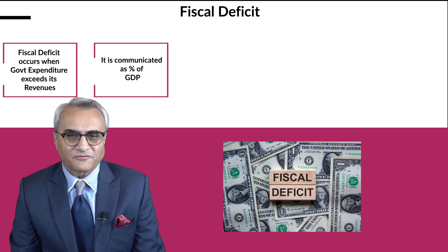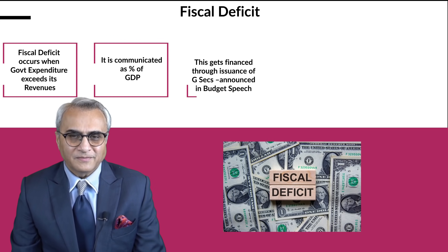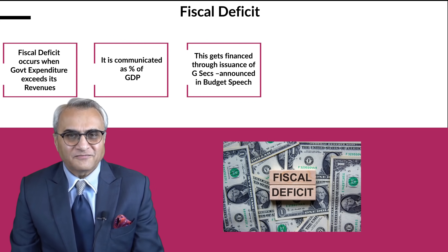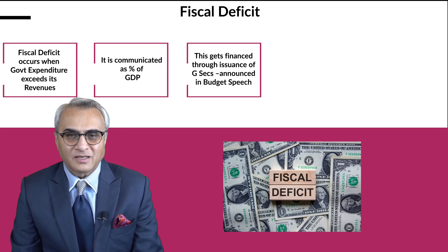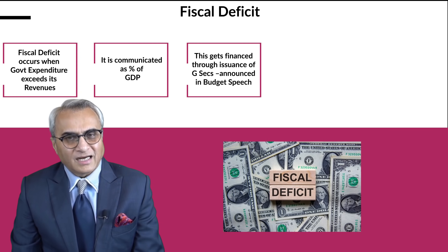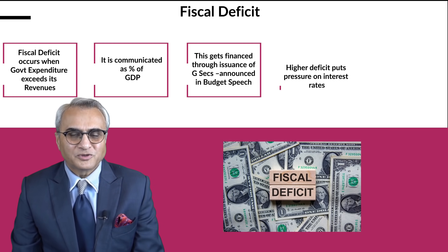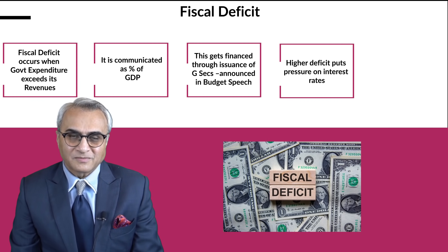The fiscal deficit gets financed through issuances of G-Secs, which get announced post the budget speech of the Finance Minister. Higher deficit puts pressure on interest rates because of higher borrowing.